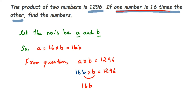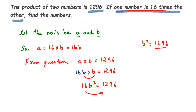We get 16b² equals 1296. Now I want the value of b, so I'm going to isolate it by transposing 16 to the other side. In multiplication, when it moves to the other side it becomes division, so b² equals 1296 divided by 16.